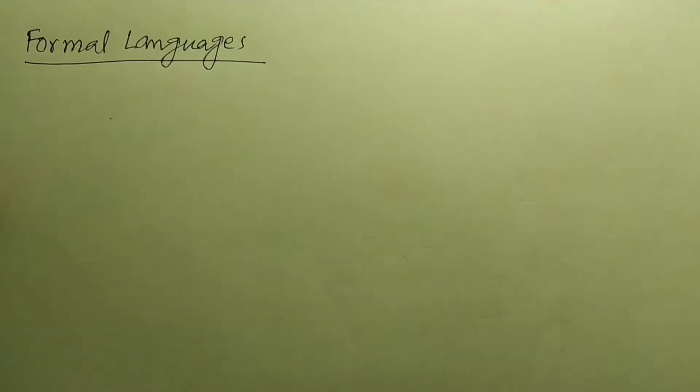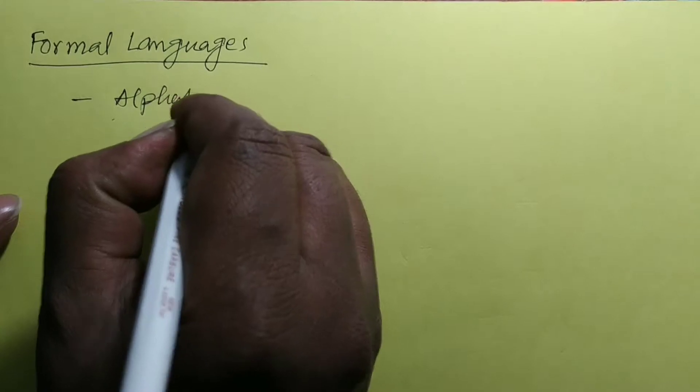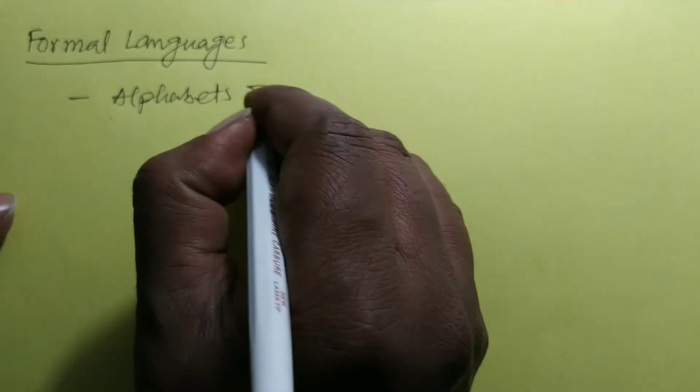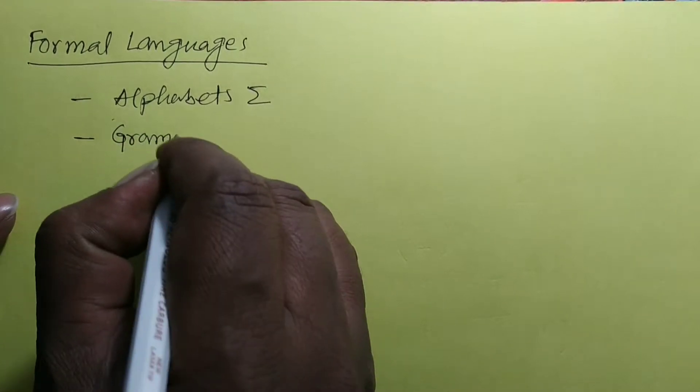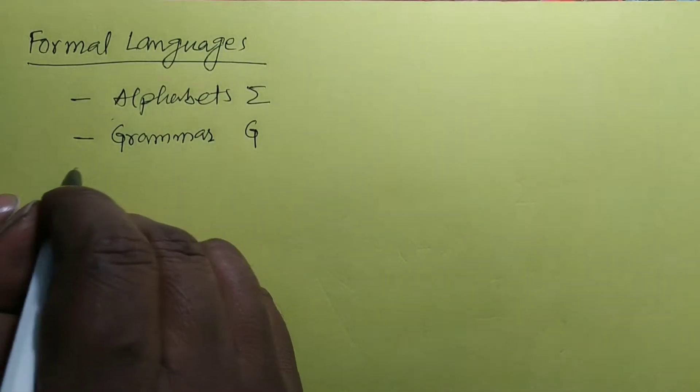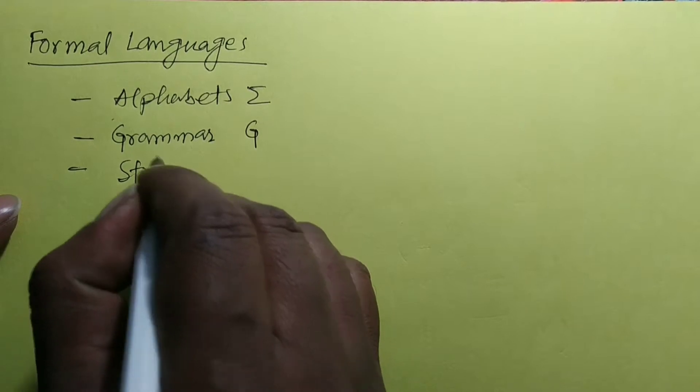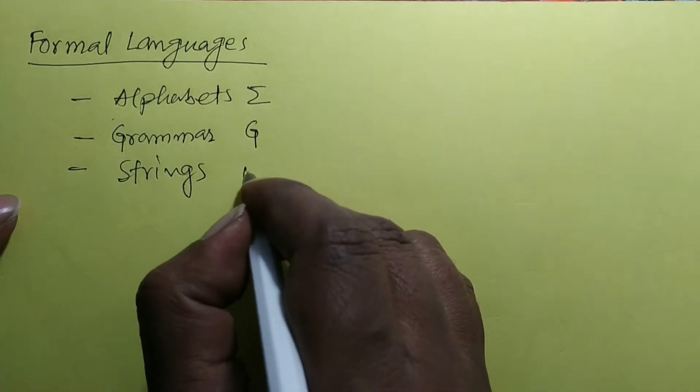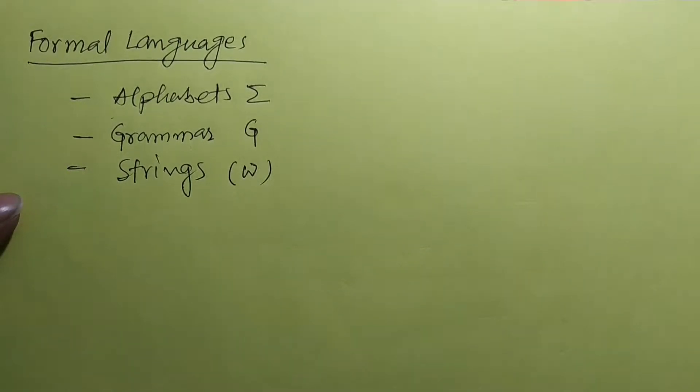Hello friends, welcome to IQPOP. As you know, for formal languages three things are very important: one is alphabets, another is grammar or G, another is set of strings, and these strings are usually generated by this grammar.